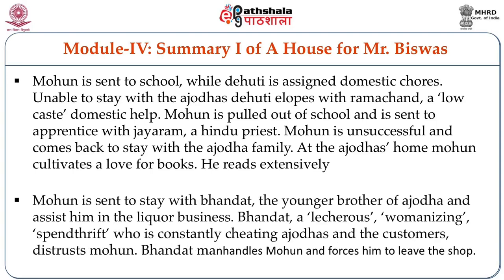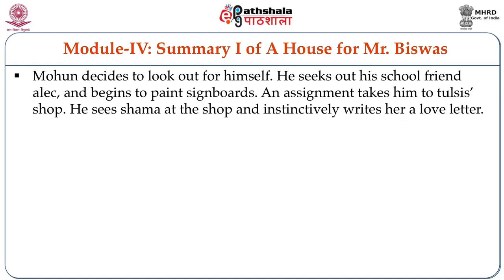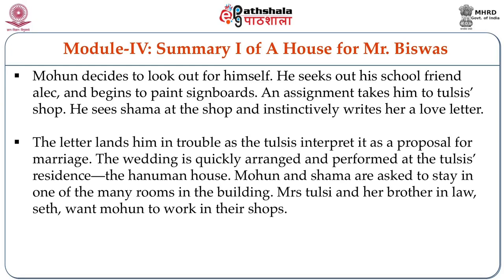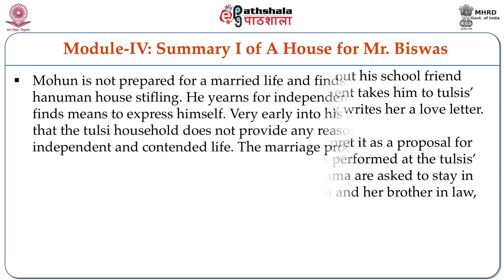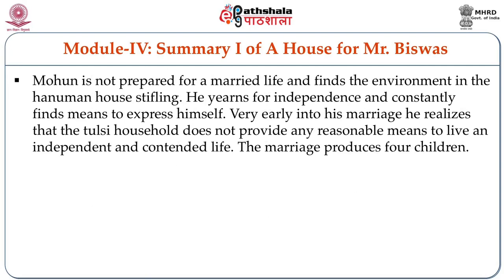At the Ajodha's house, Mohan cultivates a love for books and reads extensively. He is sent to stay with Bandhat, a younger brother of Ajodha, and assists him in the liquor business. Bandhat — a lecherous, womanizing spendthrift who constantly cheats the Ajodhas and customers — distrusts Mohan, manhandles him, and forces him to leave the shop. Mohan then decides to look after himself, seeks out his school friend Ali, and begins to paint signboards. An assignment takes him to Tulsi's shop where he sees Shama and instinctively writes her a love letter. The letter lands him in trouble as the Tulsis interpret it as a proposal for marriage. The wedding is quickly arranged and performed at the Tulsi's residence, the Hanuman house. Mohan and Shama are asked to stay in one of the many rooms in the house.